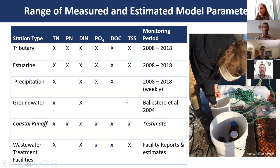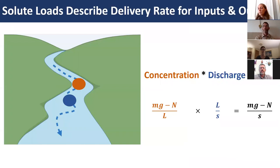While solute concentration data is valuable, we're often more interested in the rate of delivery of solutes—that is, solute loads—which describe a delivery rate or rate of accumulation in the receiving body of water. I took all concentration data, pulled USGS gauge data for the rivers to get discharge, and calculated loads as the product of concentration and discharge, helping us understand the rate at which Great Bay receives nitrogen and carbon.